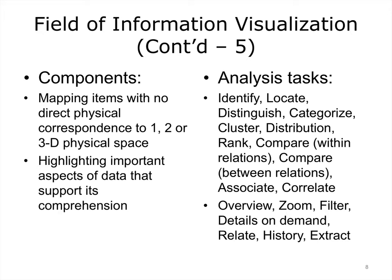Visualizing information includes two main components. First, it involves taking items with no direct physical correspondence and mapping them to one, two, or three dimensional physical space. Second, it involves giving information a visual representation that is useful for analysis and decision support. Since visualizations are meant to support different cognitive tasks, it is important to understand the nature of these tasks. Researchers in information visualization identify a large number of basic tasks that include, for example, identifying objects, distinguishing between different objects, and more. It also includes mapping them to functions of visualization displays, such as overview, zoom, etc. We will talk about these functions in greater detail in the lecture.